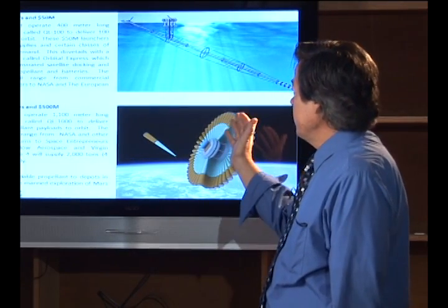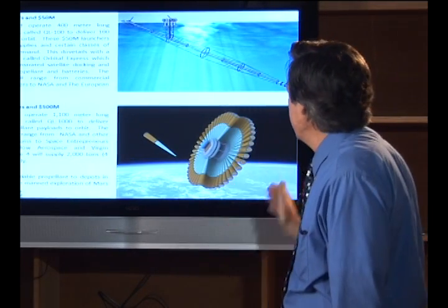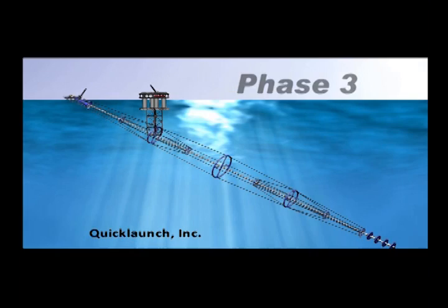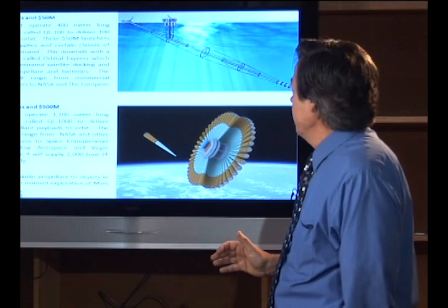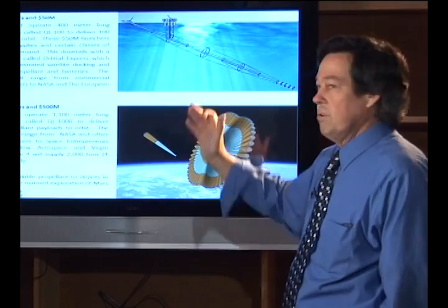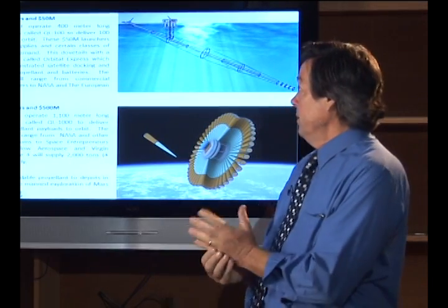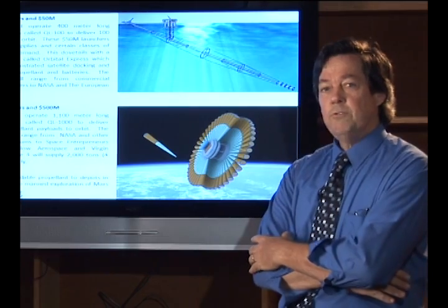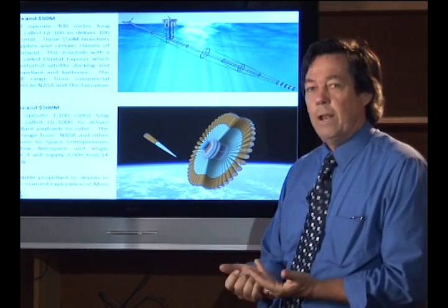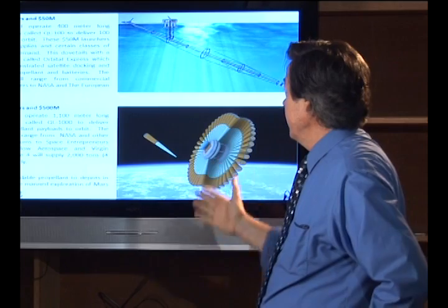Now, phase three, it gets extremely interesting because you're starting to make real money at this point. This is the QL-100, which is roughly 400 meters long, and it turns out it looks the same as the QL-1000, because you just scale them up by about a factor of two and a half or so. But these $50 million launchers can deliver supplies in certain classes of satellites on demand. For example, DARPA had a project called Orbital Express, which supplied propellant, as well as batteries, to another satellite. And this dovetails nicely into that. Of course, we'd be supplying propellant.